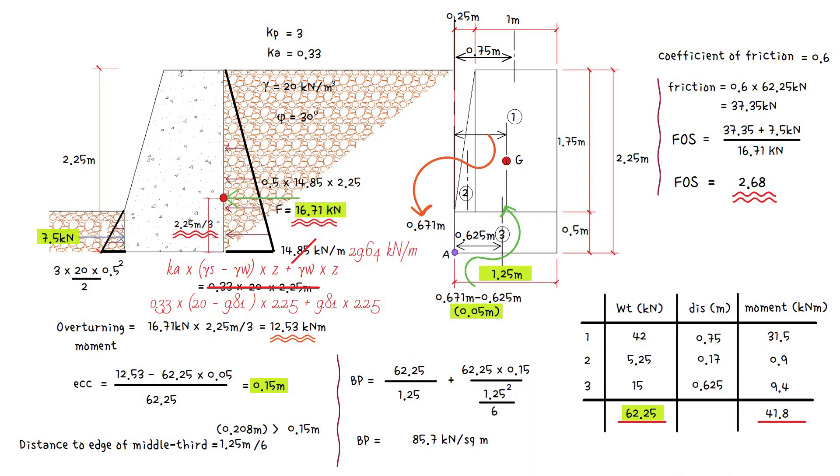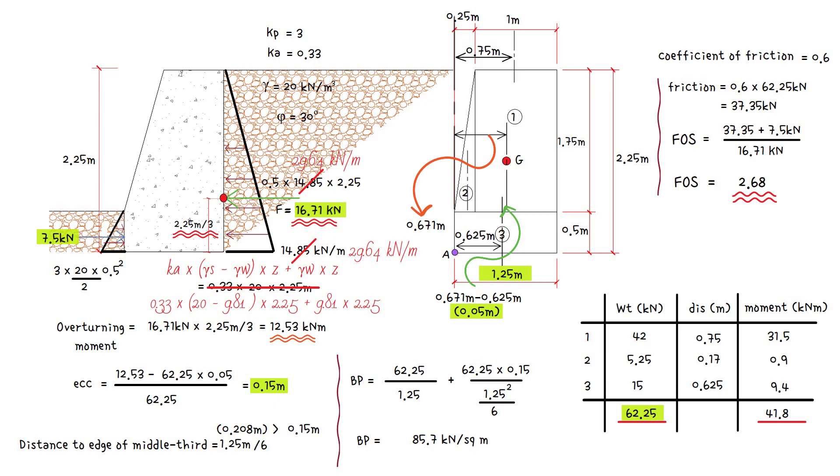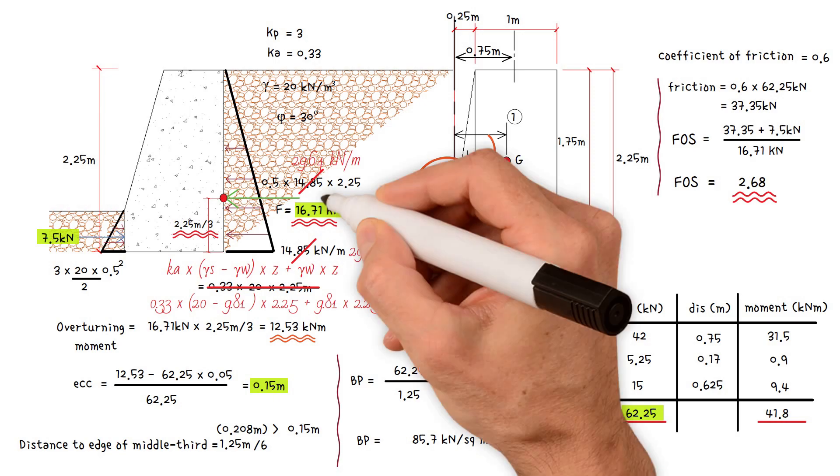As a result, for a triangular distributed load, the magnitude of the resultant force is the area of the triangle, which is 0.5 times 29.64 kilonewtons per meter times the depth 2.25 meters.